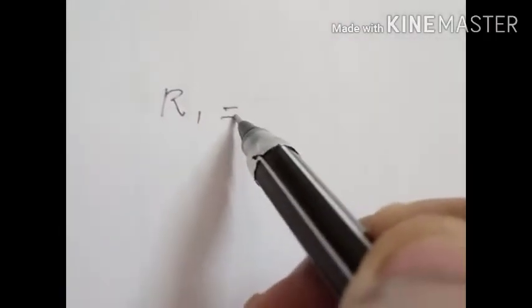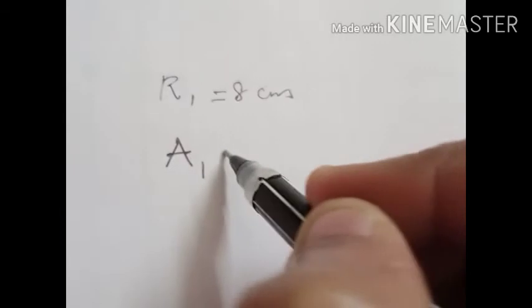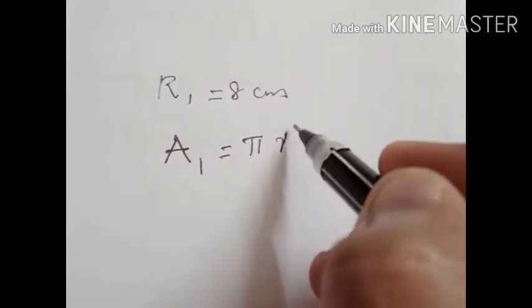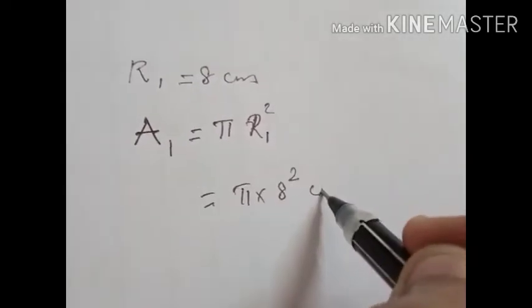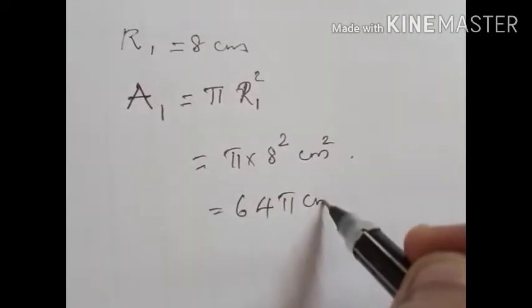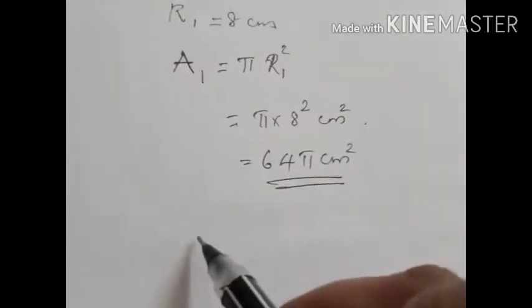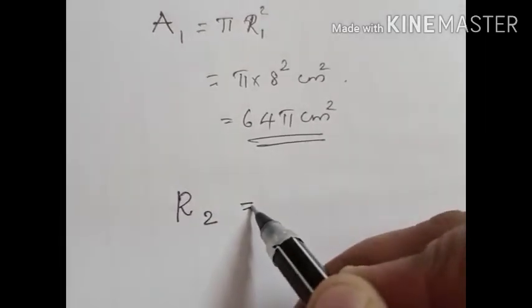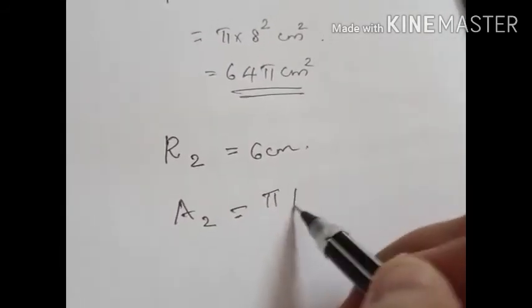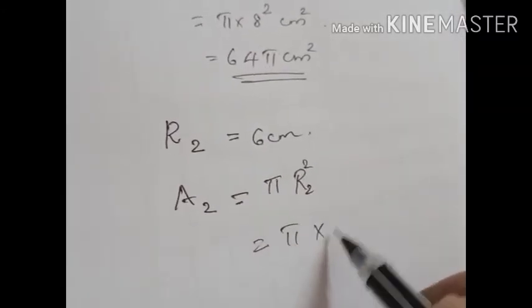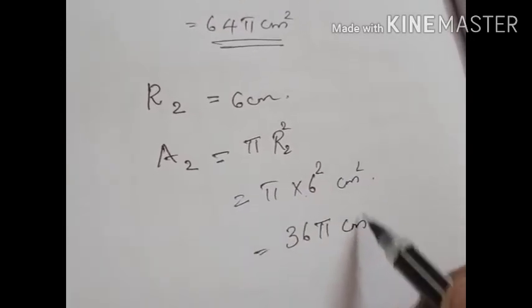Radius of the first circle R1 equals 8 cm. Area A1 equals Pi R1 square, that is Pi into 8 squared, which gives 64 Pi cm square. No need to substitute Pi here because we have to add them. Radius of the second circle R2 equals 6 cm. Its area A2 equals Pi R2 square, that is Pi into 6 squared, giving 36 Pi cm square.